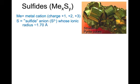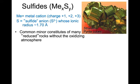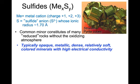Now let's look at sulfides. Sulfides have a general formula ME(X) S(Y), where ME is a metal cation with a typical charge of plus 1, 2, or 3. S is the sulfide anion, whose ionic radius is about 1.7 angstroms — slightly larger than oxygen — which means it holds its electrons less strongly than oxygen and forms more ionic rather than covalent bonds.